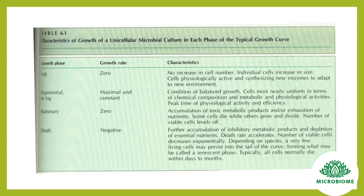In the stationary phase, the growth rate is zero. Characteristics include accumulation of toxic metabolic products or exhaustion of nutrients. Some cells die while others grow and divide, so the number of viable cells levels off. In the death phase, the growth rate is negative.